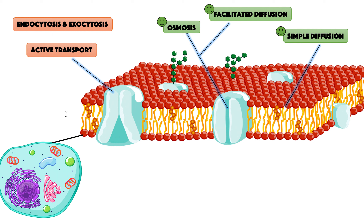Now, what is the main function of a membrane? The main function of a membrane is to control what goes in and what goes out — it's like the wall. Now, just like in real life, you can transport by a Lamborghini, by walking, by a boat.